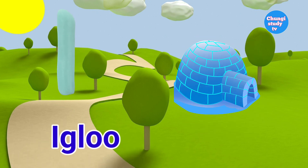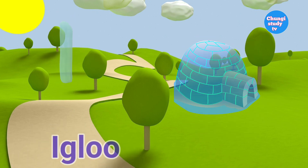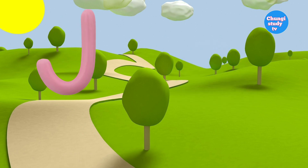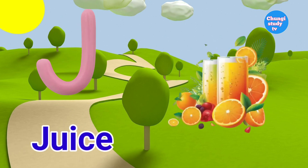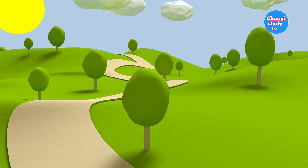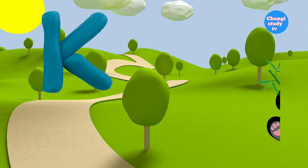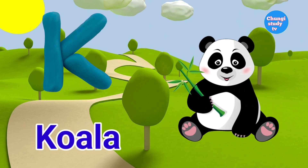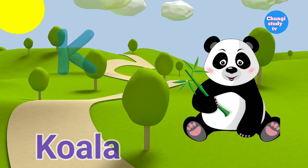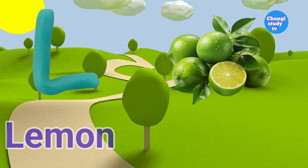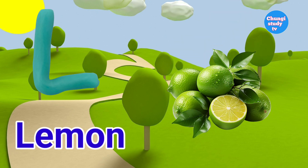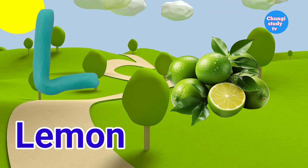I — I for Igloo. J — J for Juice. K — K for Koala. L — L for Lemon.